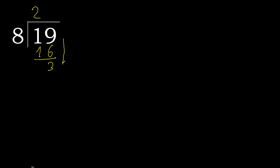Subtract. There is no number remaining, therefore complete. Always complete with 0 here. Complete point. Bring down 0, giving 30.